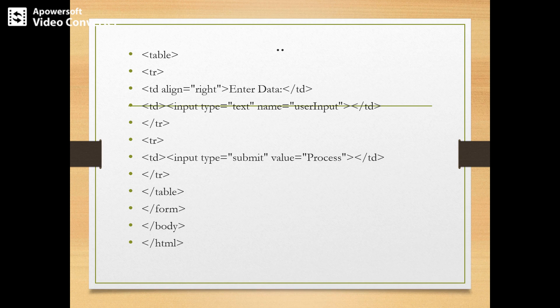The input type is text with name user-id, followed by closing the TD tag. Then another input of type submit with value 'Process' is added.